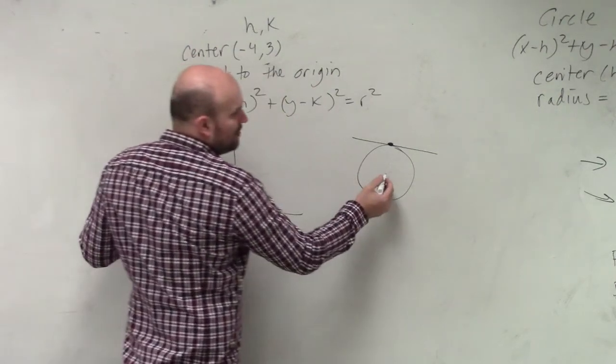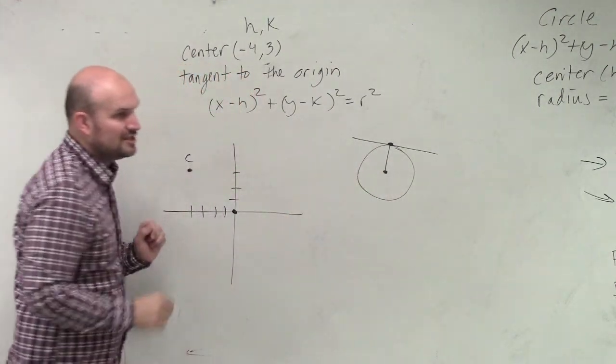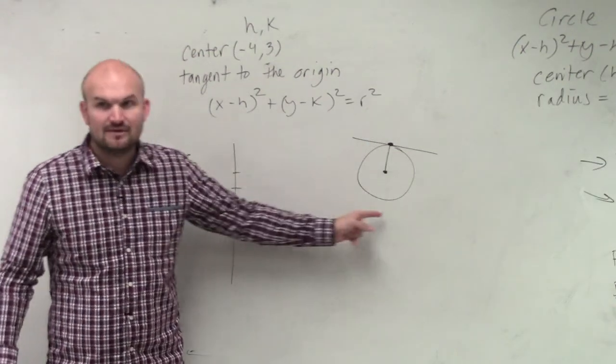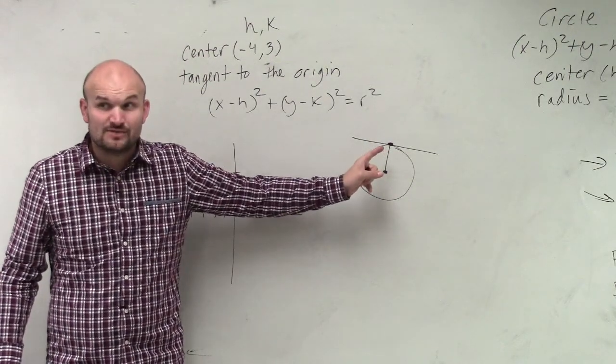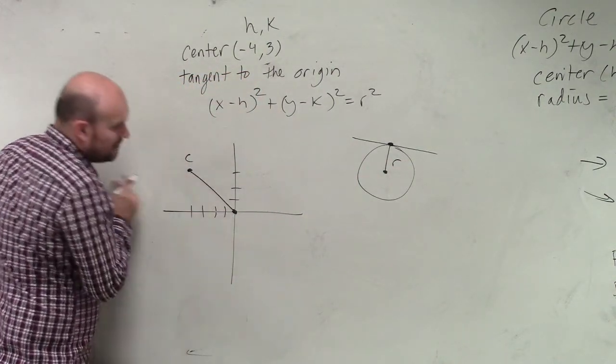Now, what is one thing we know about a circle? If I know the distance from the center to the edge, is that equal all the way around? Yeah. Right, so that distance is what we call the radius.